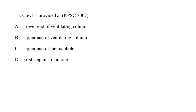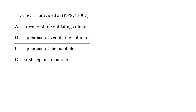A cowl is provided at the upper end of a ventilating pipe to allow proper ventilation and prevent entry of rainwater or debris.